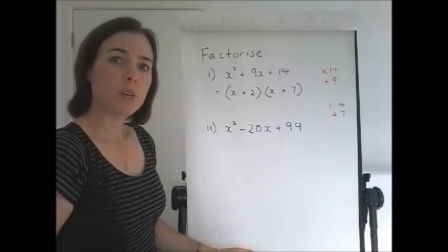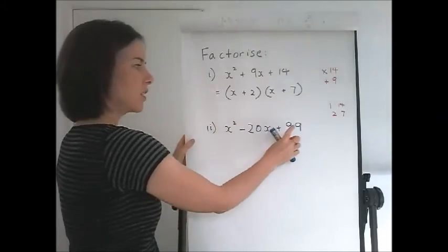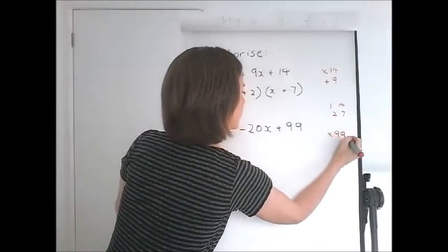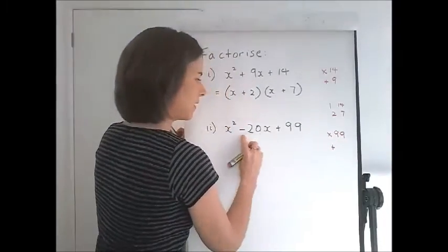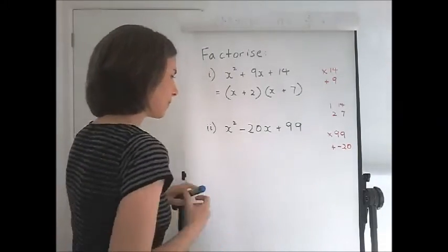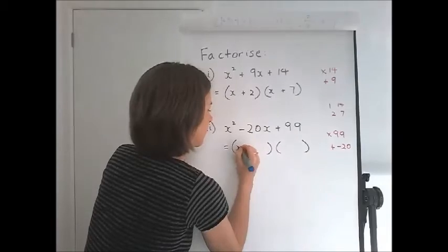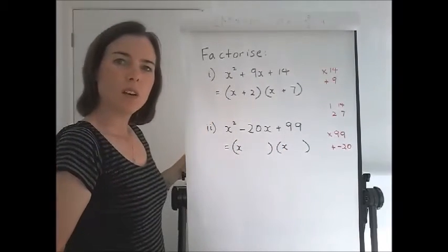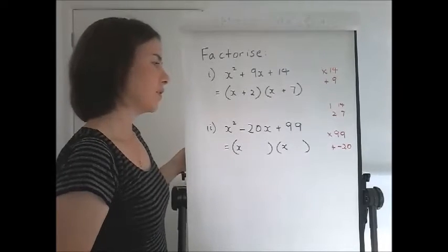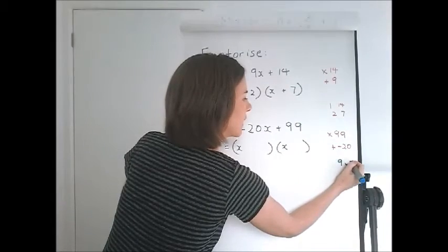Same system. We have just a 1 here, so we need our numbers to multiply to 99 and add to negative 20. When we find those, they will go in the brackets with the x's. Okay. Factors of 99. You can go through and find as many as you can, but you will eventually reach 9 and 11.